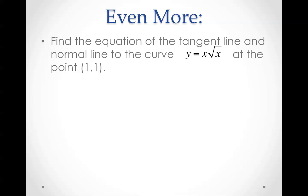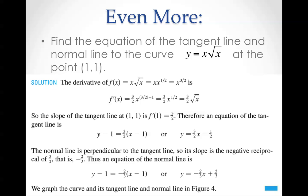Find the equation of the tangent line and the normal line to the curve y equals x times root x at the point (1, 1). The derivative of f(x) is x times root x, or as we can rewrite it, x times x to the 1/2. When we multiply numbers with exponents, we end up adding the exponents. So therefore, it's x to the 3/2. When we take the derivative, we pull the 3/2 out front, leave the x, and take 3/2 minus 1. Therefore, we get 3/2 x to the 1/2, or we can rewrite that as 3/2 root x.